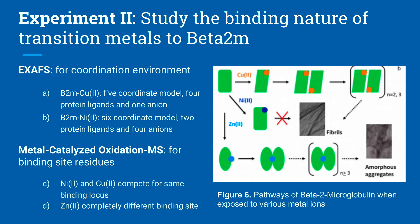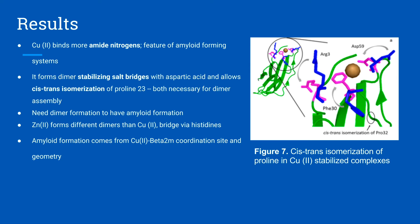They also used metal-catalyzed oxidation mass spectrometry for the binding site residues. It was discovered that nickel 2+ and copper 2+ compete for the same binding locus, whereas zinc 2+ has a different binding site. Copper 2+ binds more amide nitrogens, which is a feature of amyloid-forming systems. It forms dimer-stabilizing salt bridges with aspartic acid and allows cis-trans isomerization of proline 32, both of which are necessary for dimer assembly.